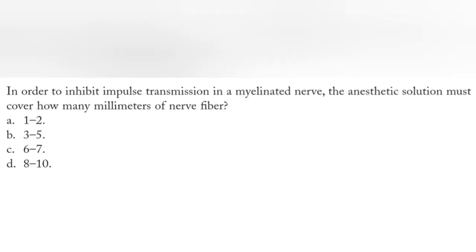Now the third question: in order to inhibit impulse transmission in a myelinated nerve, the anesthetic solution must cover how many millimeters of nerve fibers? Options: 1 to 2 millimeter, 3 to 5 millimeter, 6 to 7 millimeter, 8 to 10 millimeter.